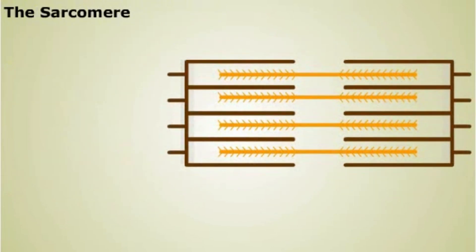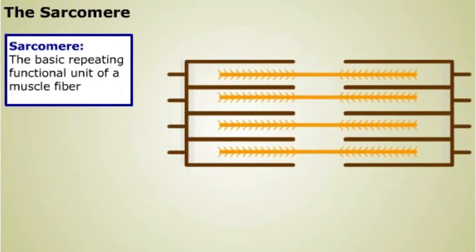The arrangement of the myofilaments creates a repeating functional unit called a sarcomere. Each region of the sarcomere has a specific name.